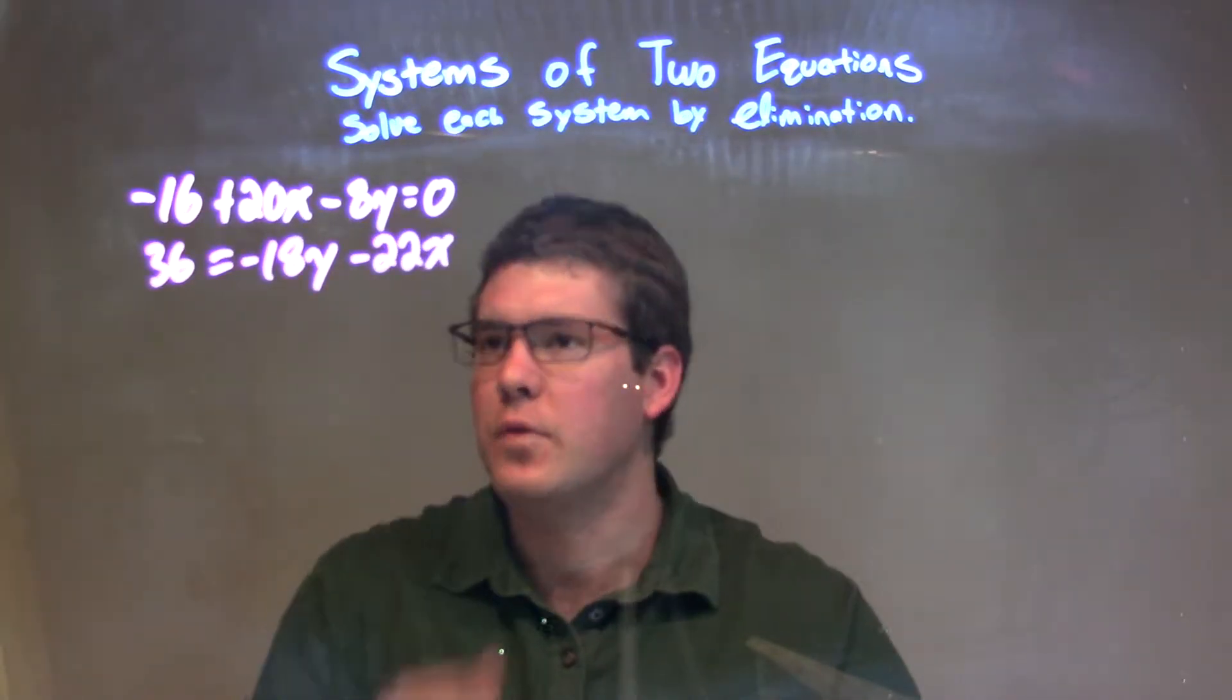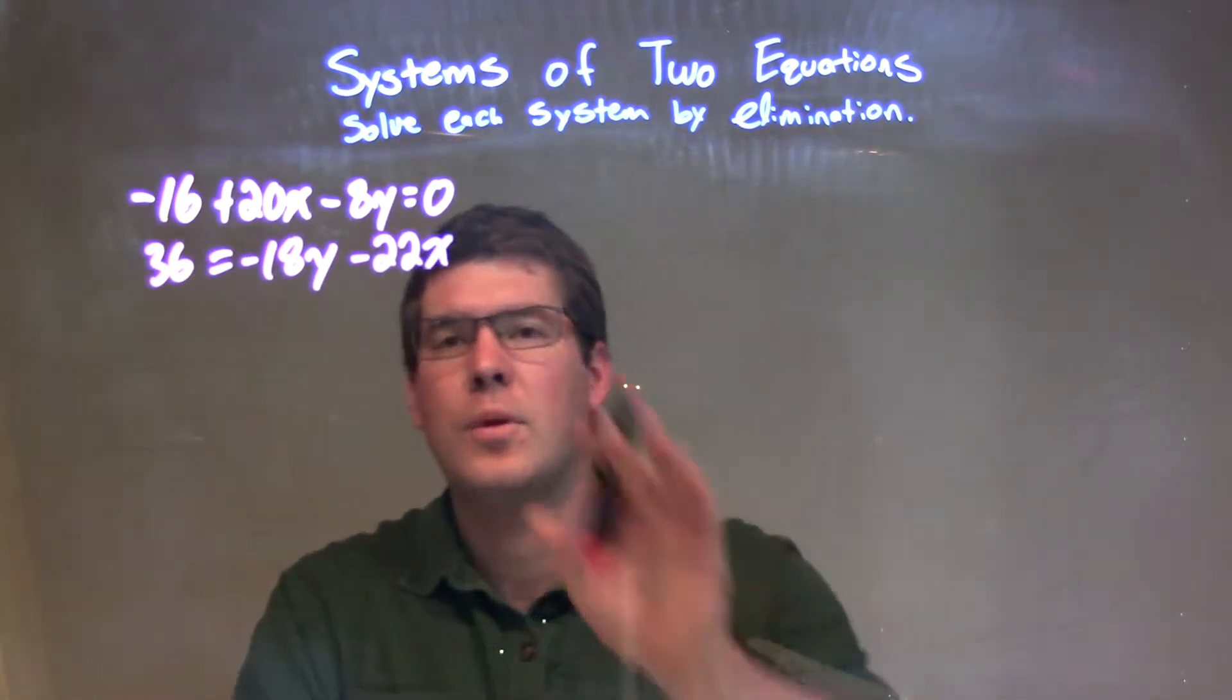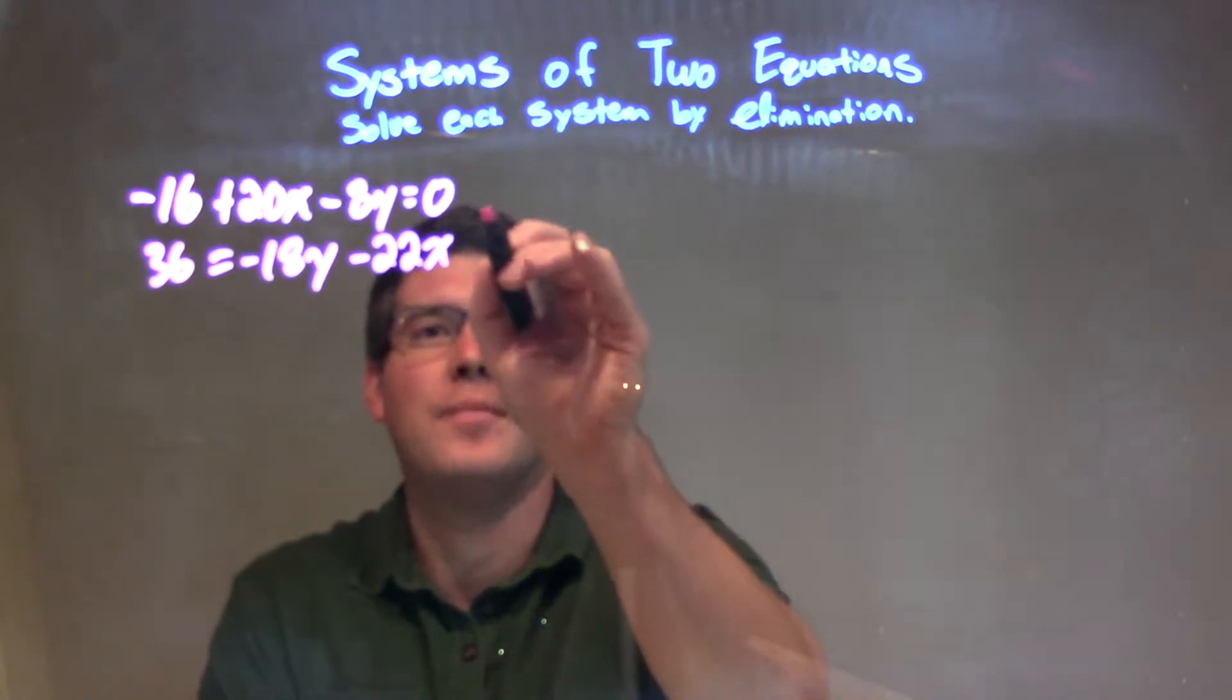What I'm going to do first is I'm going to rewrite this so all my variables are on one side and my numbers on the other. So, I'm going to bring all the variables to the right-hand side to match the bottom equation.